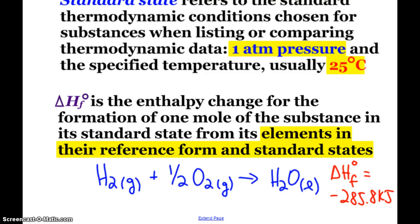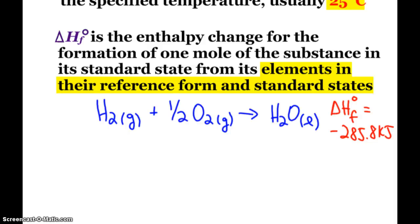Now these standard enthalpies of formation can be obtained directly, like if we can run this reaction under the standard conditions and get an answer in a calorimeter, or perhaps, like for tungsten carbide, it could be measured indirectly by using Hess's law to find the delta H of formation.